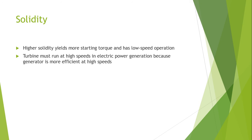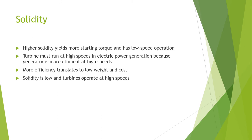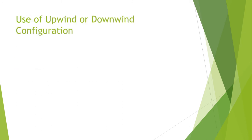More starting torque means that the operational speed will be lower. The turbine must run at high speeds in electrical power generation because the generator is more efficient at higher speeds. More efficiency translates to lower weight and cost. When solidity is low, turbines can operate at higher speeds. This is the same phenomenon used in high-speed two-blade designs.